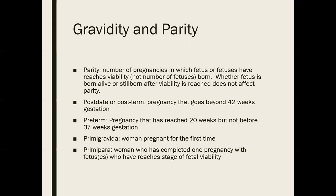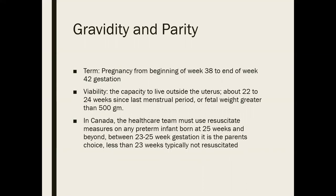When talking about post-term or post-date, that's beyond 42 weeks. The normal range is beyond 37 weeks — at 37 weeks you are term. Typically we calculate your due date to 40 weeks, but anywhere beyond 37 weeks is full term; beyond 42 weeks is post-term or post-date. Primigravida is a woman who is pregnant for the first time, and primipara is a woman who has completed one pregnancy to the stage of fetal viability. Term means from the beginning of week 38 to the end of week 42.